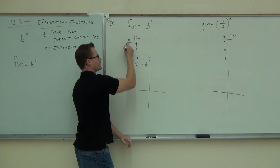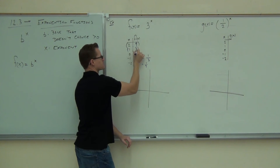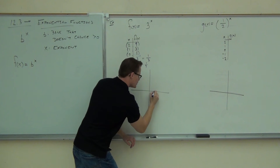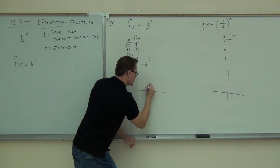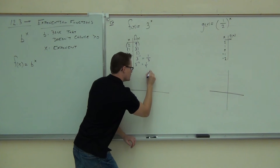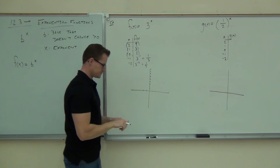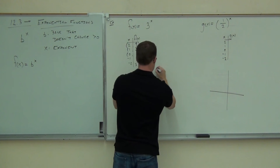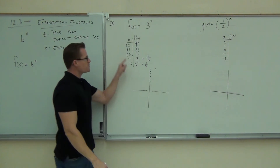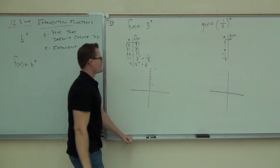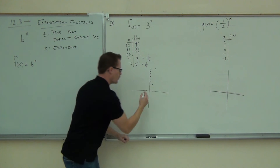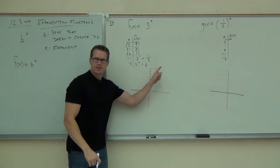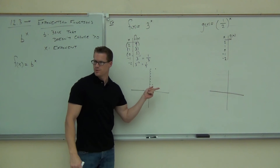If you plot these points — plug in two, get out nine; plug in one, get out three; plug in zero, get out one — and you look at this side of the graph, you can see it's not straight. If you plug in three, what's three to the third? You're already at 27.